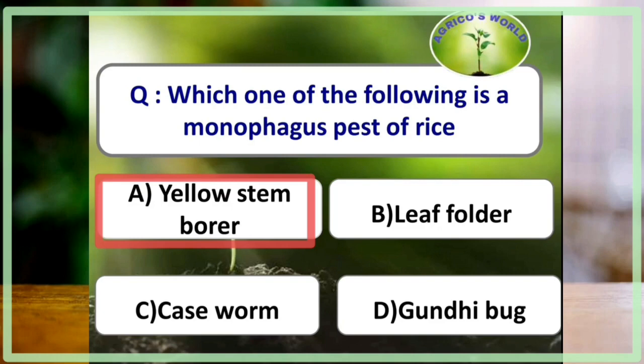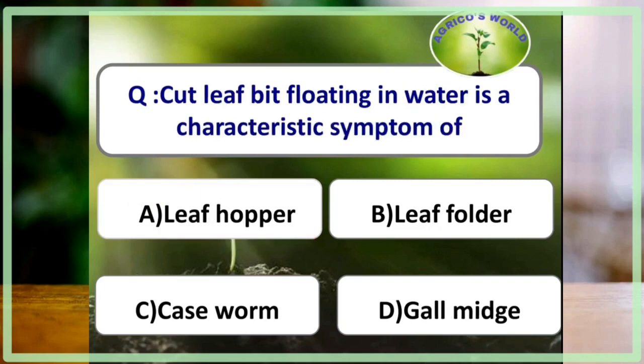The major symptom of attack of yellow stem borer in rice is the formation of dead heart in young seedlings and white ear head in panicle stage. Cut leaf bits floating in water is a characteristic symptom of rice caseworm.